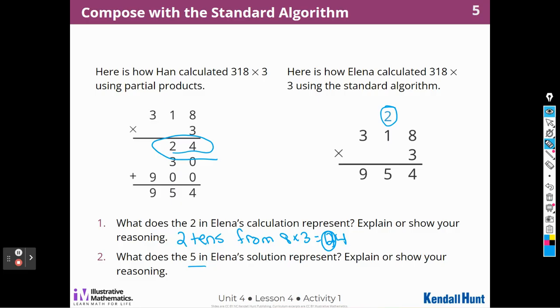What does the 5 represent in Alina's solution? So I think it's this 5 here, right? So the 2 tens plus the 3 times 10 is 30, plus 2 tens is 50, right? So it represents 50 because 3 times 10 equals 30. And then we have to add the 2 tens that we carried over, and that's going to give us the 50, or 5 tens.